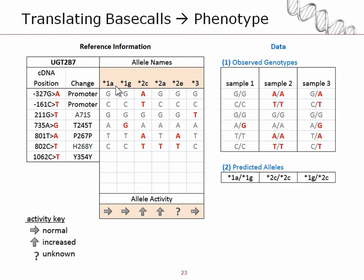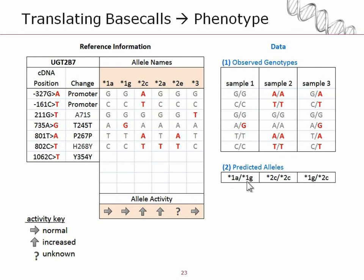Let's match this information to some data that we have for three samples. For this gene, sample one has a pair of genotypes — one from each parent. We are reference homozygous for five of the six markers and heterozygous variant for the fourth marker. The first part of haplotyping is to determine what pair of star allele names is consistent with these observed genotypes. For sample one it's fairly obvious that the only combination consistent with the observed genotypes is star 1a and star 1g — one from one parent and one from the other. The predicted star alleles for that sample are therefore star 1a and star 1g.